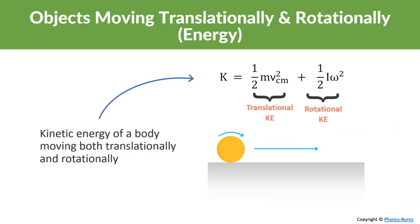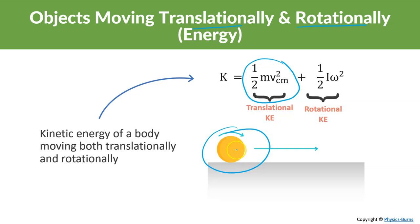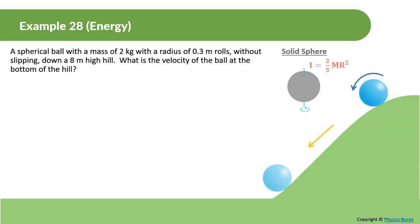For an object moving both translationally and rotationally, the total kinetic energy is one-half m times v-center-of-mass squared plus one-half I omega squared. For a rolling ball, we must account for both the translational velocity component and the rotational spinning component of the kinetic energy.